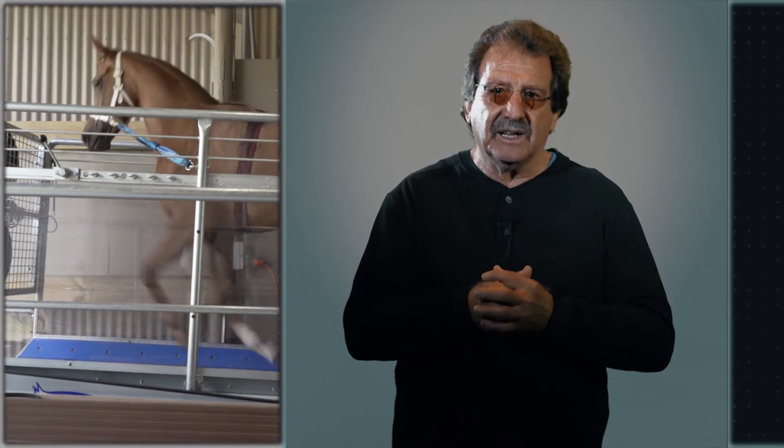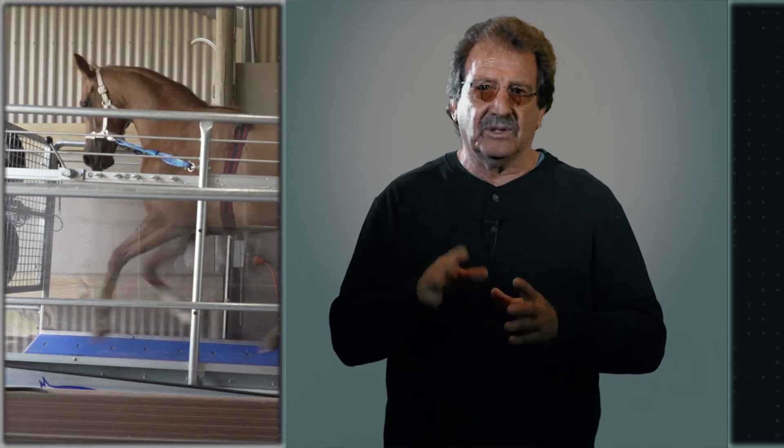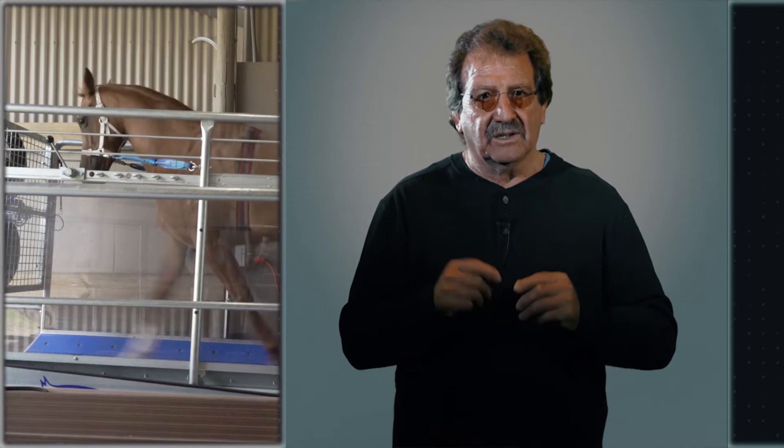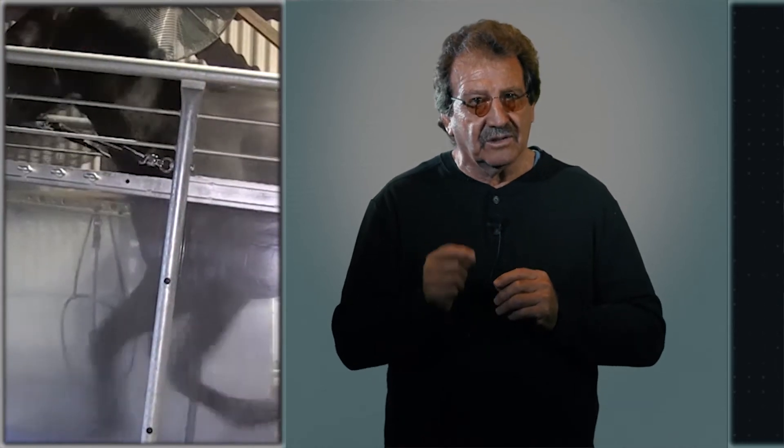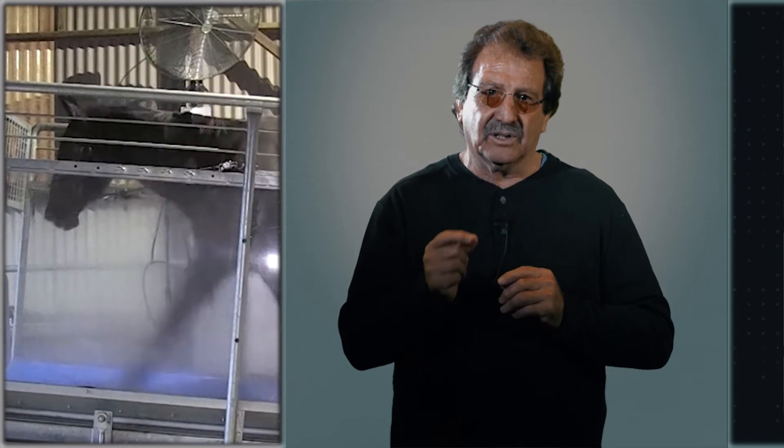Throughout the gallop, the heart rate should remain fairly level over the time period. Remember there is a linear relationship between heart rate and workload or speed on the treadmill. So as the treadmill speed is constant during the gallop, the workload is constant, so heart rate should also be constant.